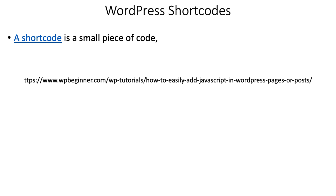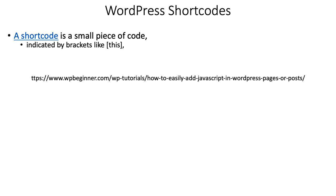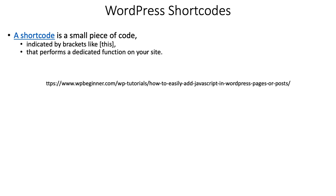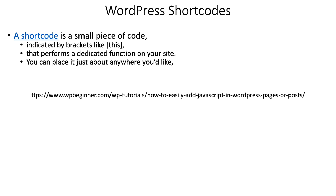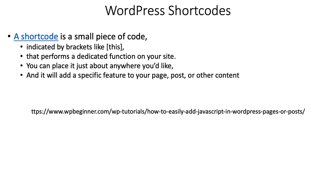WordPress has something called shortcodes. A shortcode is a small piece of code indicated with brackets like this. It performs a dedicated function on your site, and you can place it just about anywhere you'd like. As you add a specific feature to your page, post, or content — there are shortcodes to put Google Maps in and many other things. This URL will take you to a write-up that helps you know more about them.